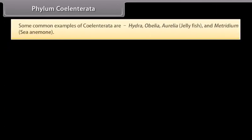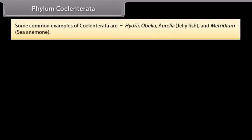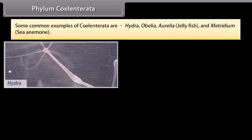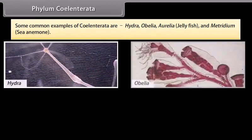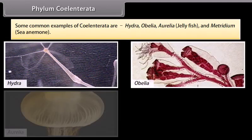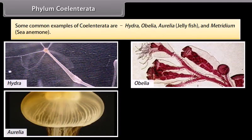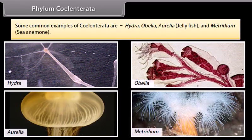Some common examples of Coelentrata are hydra, Obelia, Aurelia, jellyfish, and Metridium, sea anemone.